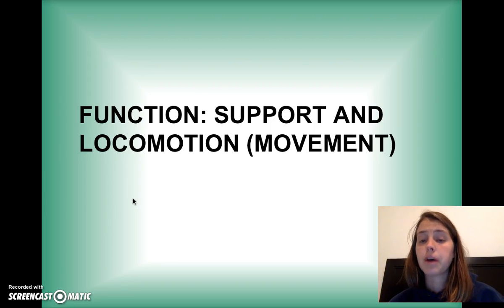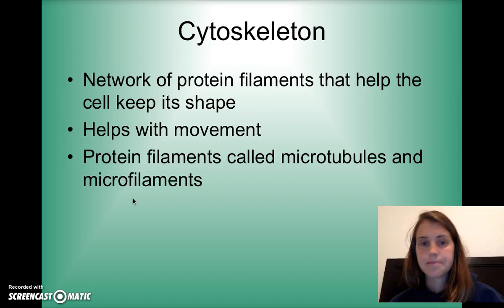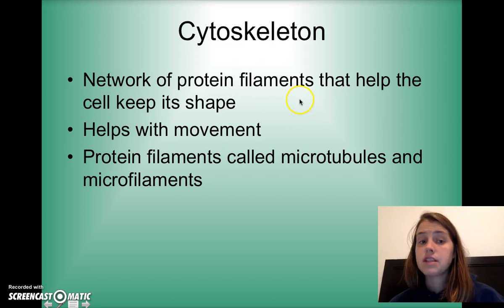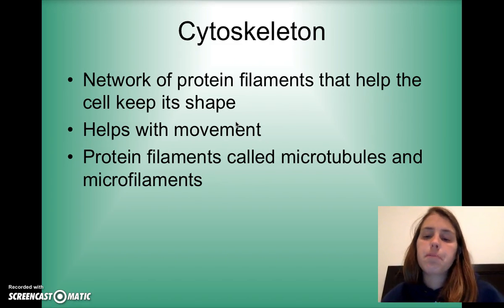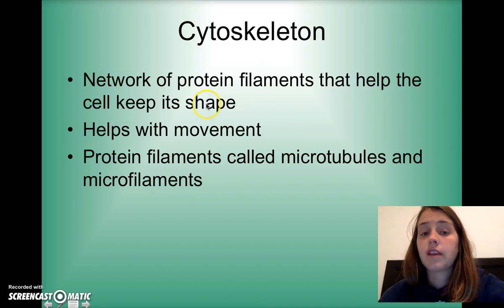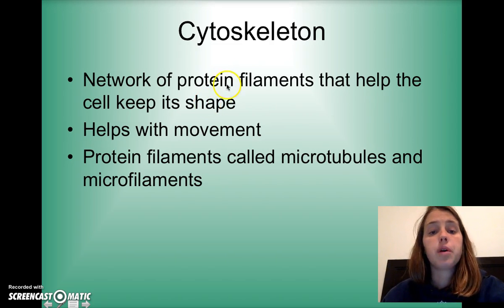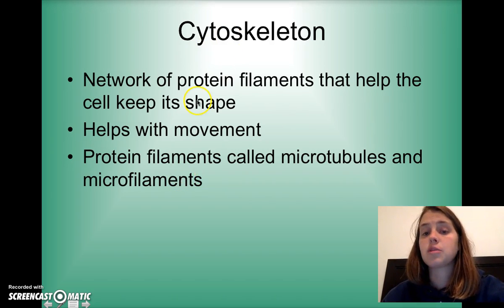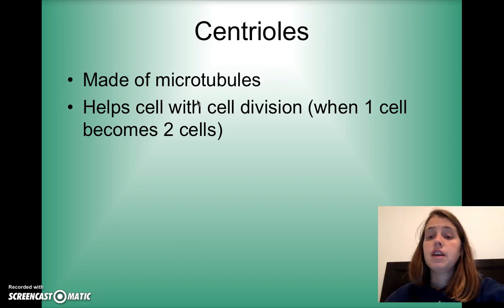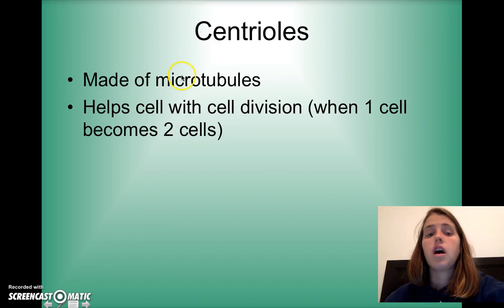The final function we'll discuss is support and locomotion. The cytoskeleton is a network of protein filaments that help the cell keep its shape — just like our skeleton keeps our bodies up so we don't melt into a puddle. It also helps with movement. Protein filaments called microtubules and microfilaments are part of this cytoskeleton. Centrioles are a big part of cell division, and they are made of microtubules.